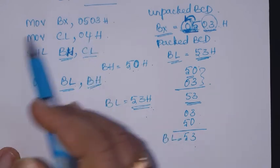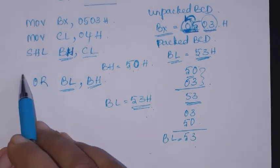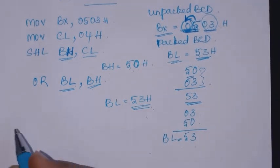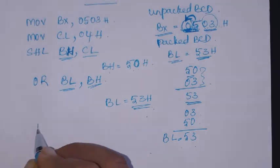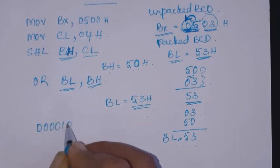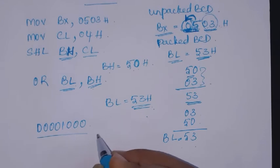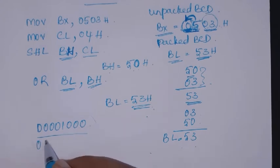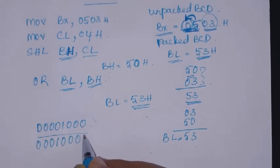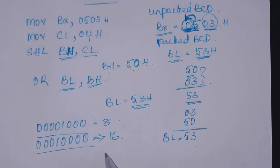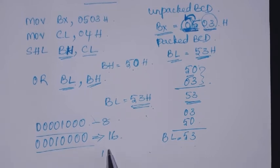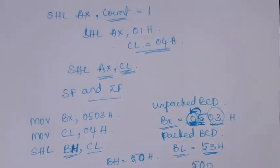After this instruction, BL register will have 53H, which is the required packed BCD for the unpacked BCD value 0503. This is just an example to show where shift instructions can be used. Additionally, shift left is equivalent to multiplication by 2: for example, if a register holds 8 and you shift left by 1 bit, the value becomes 16.